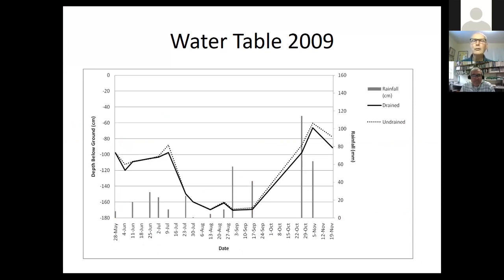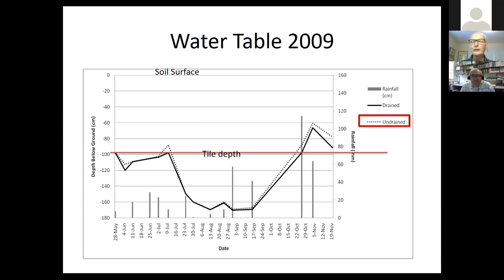So the real issue is about water table and the management of it. Here is a water table graph from 2019. The zero is the soil surface, the red line is where the tile is located at about 100 centimeters or about three feet. The next part of the graph shows the undrained water level compared with the solid line which is the drain level. The water table for a large part of the 2019 season was below that tile line except for early and late in the season, related to rainfall. In the second half of the season when the crop utilizes a lot of moisture, it draws all the moisture out of the soil and both the tiled and non-tiled water table dropped very low below the tile line.